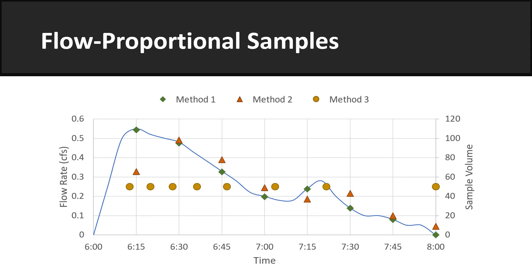The flow-proportional method should be selected based on what is most appropriate considering the program, monitoring technique, and available equipment. Compositing Methods 2 and 3 are more accurate than Method 1, because Methods 2 and 3 both use the total volume of flow to scale the sample volume, whereas Method 1 uses a single instantaneous rate to estimate the flow over the entire sampling interval. However, for manual methods, compositing Method 1 is generally the most practical choice. If automated equipment is to be used, Method 3 is generally preferred because it minimizes the need for measuring and splitting samples, which can increase the chance for sample contamination.